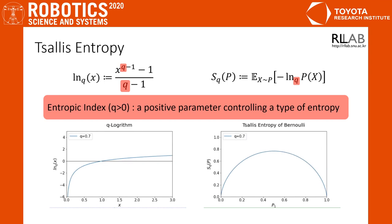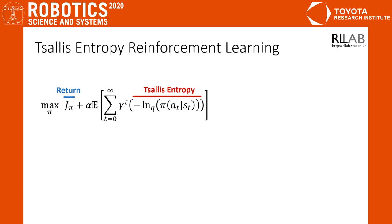As you can see in the graph, if we increase the entropy index, the magnitude of the Tsallis entropy decreases. So, we employ Tsallis entropy for efficient exploration.